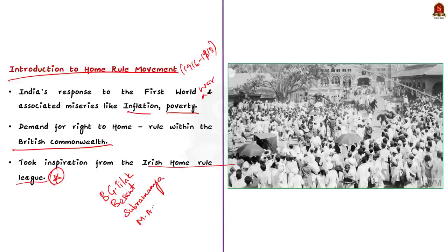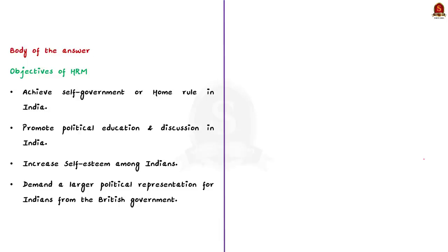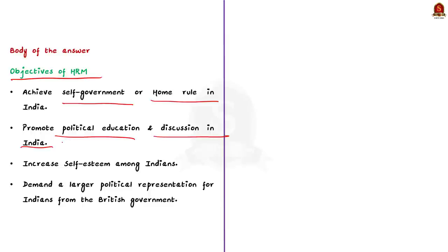Moving to the main body of the question — the first part asks you to enumerate the objectives of the Home Rule Movement. The objectives include: first, to achieve self-government or home rule in India; second, to promote political education and discussion in India; third, to increase self-esteem among Indians so they will speak against government oppression; and finally, to demand larger political representation for Indians from the British government — a demand that was natural since Indians actively supported Britain in World War I.